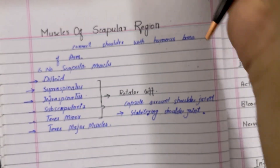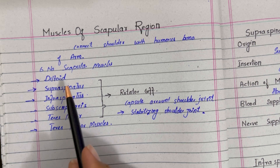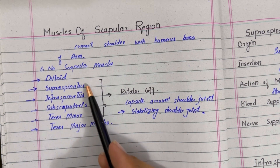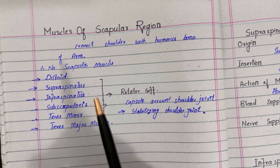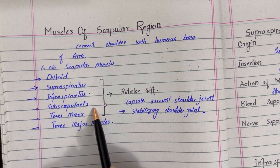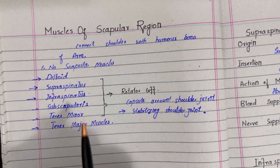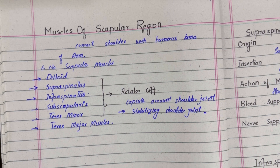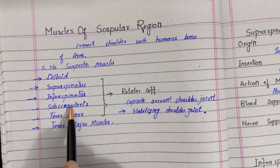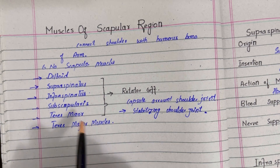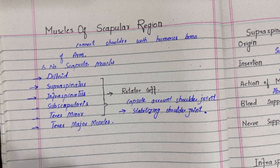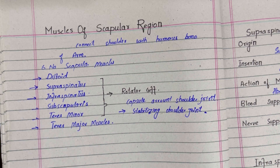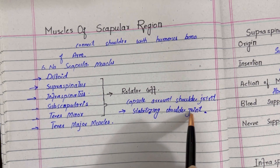The muscles of the scapular region total six in number: the deltoid muscle, the supraspinatus muscle, the infraspinatus muscle, the subscapularis muscle, the teres minor muscle, and the teres major muscle. Among these six muscles, the tendons of the supraspinatus, infraspinatus, subscapularis, and teres minor form a capsule around the shoulder joint and are called the rotator cuff muscles. These tendons are responsible for stabilizing the shoulder joint.